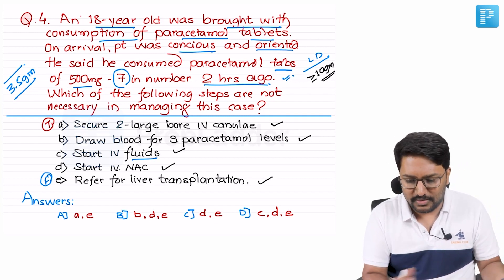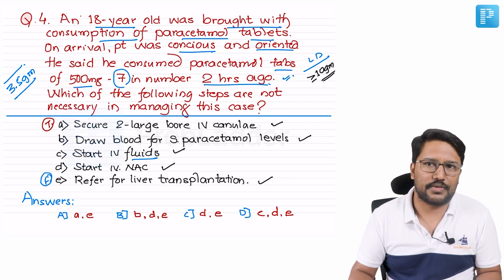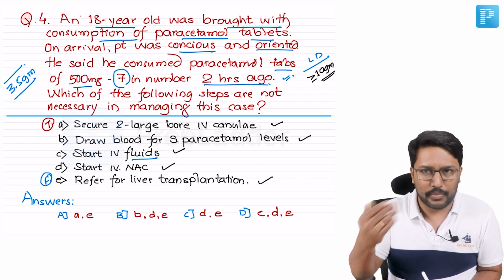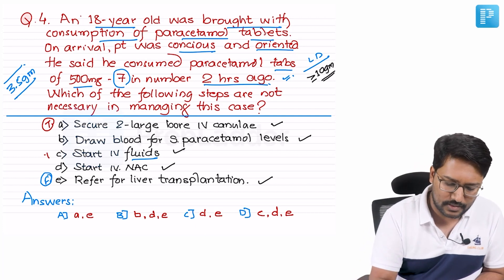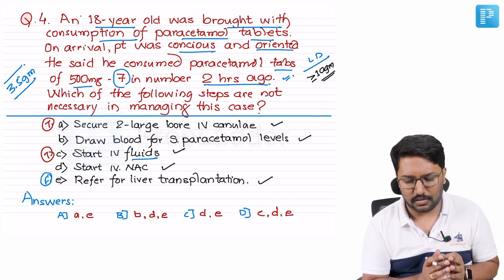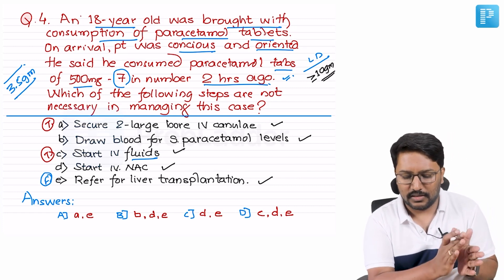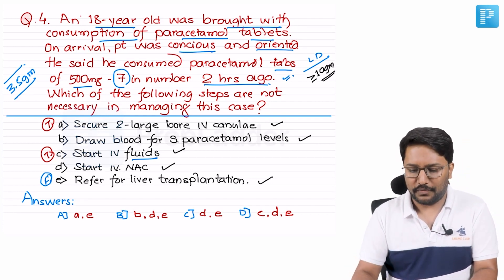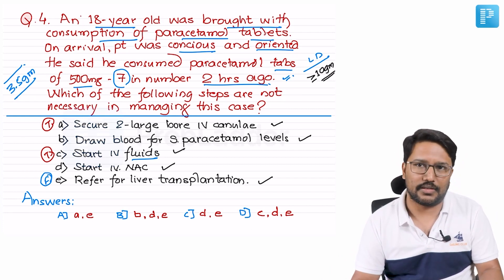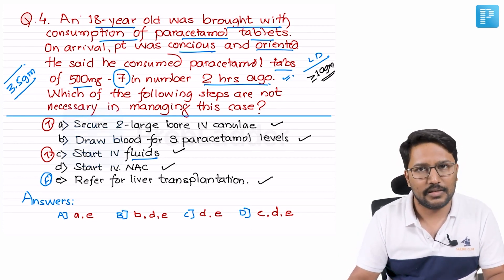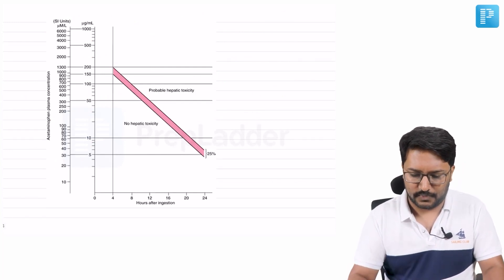Starting IV fluids is reasonable — you may do a stomach wash if within one hour, keep the patient nil per oral, and maintain hydration. Now I need to decide whether to draw blood for serum paracetamol levels and whether to start N-acetylcysteine. We don't treat all paracetamol poisoning cases with N-acetylcysteine; the decision is based on serum paracetamol levels.